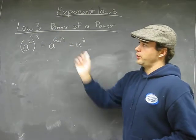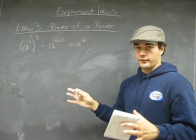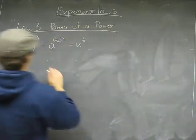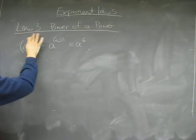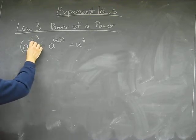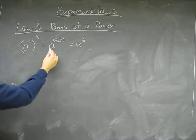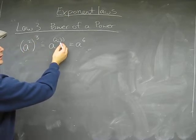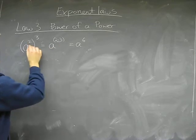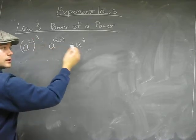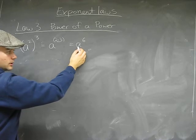Law number three: exponent laws. Definite notebook material. Power over power. It states that something to the power of something, to the power of something, is the same as that base with the exponents multiplied. So, 8 to the 2, to the power of 3, is 8 to the 2 times 3, which equals 8 to the 6.